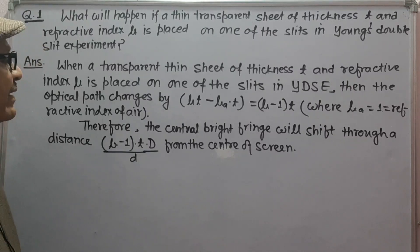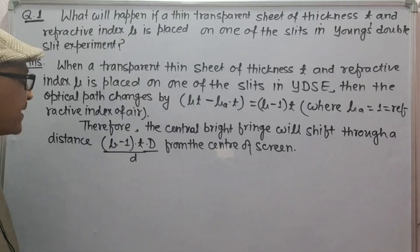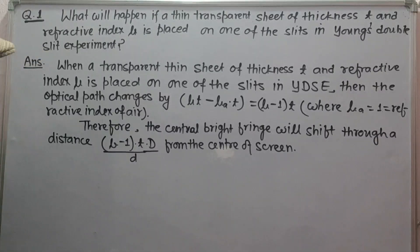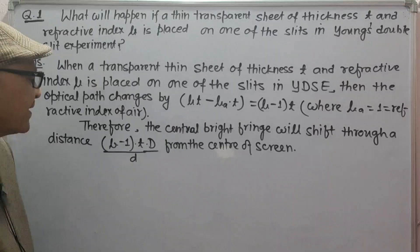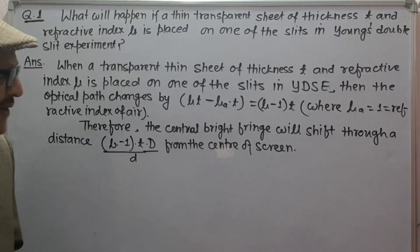Therefore, the central bright fringe will shift through a distance (mu minus 1) × t × D upon d, where capital D is the distance of the screen from the slits and small d is the slit separation.